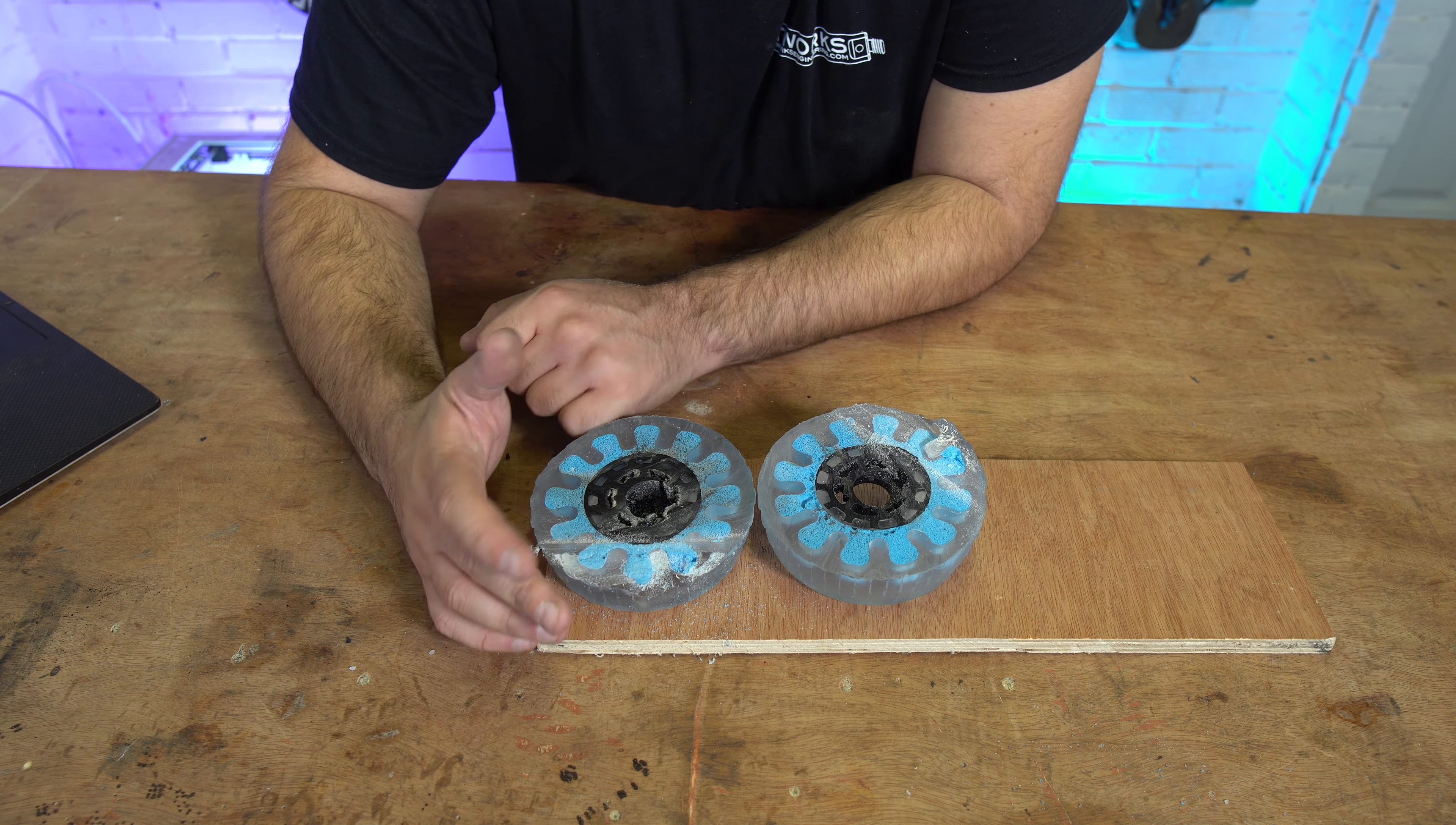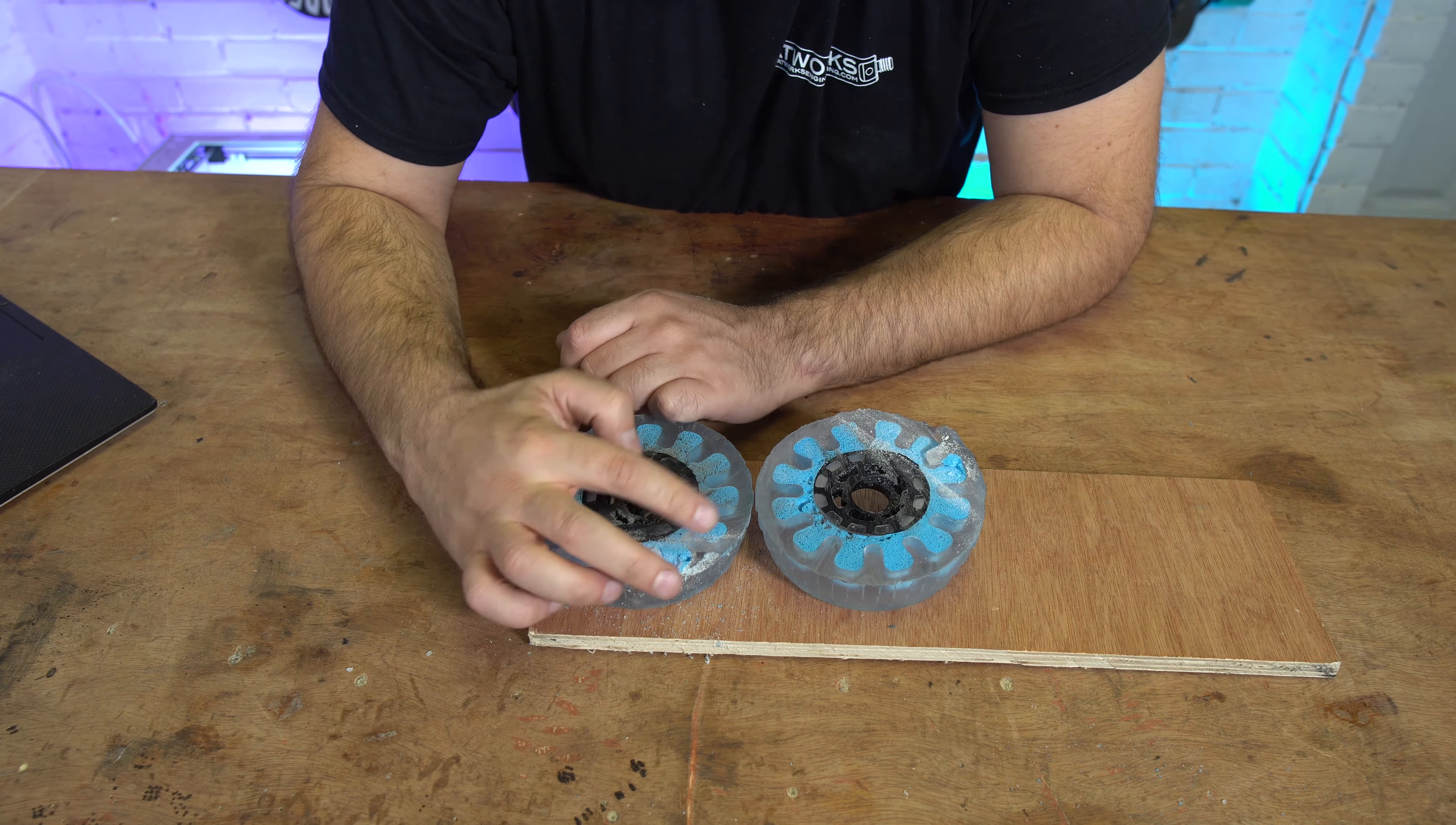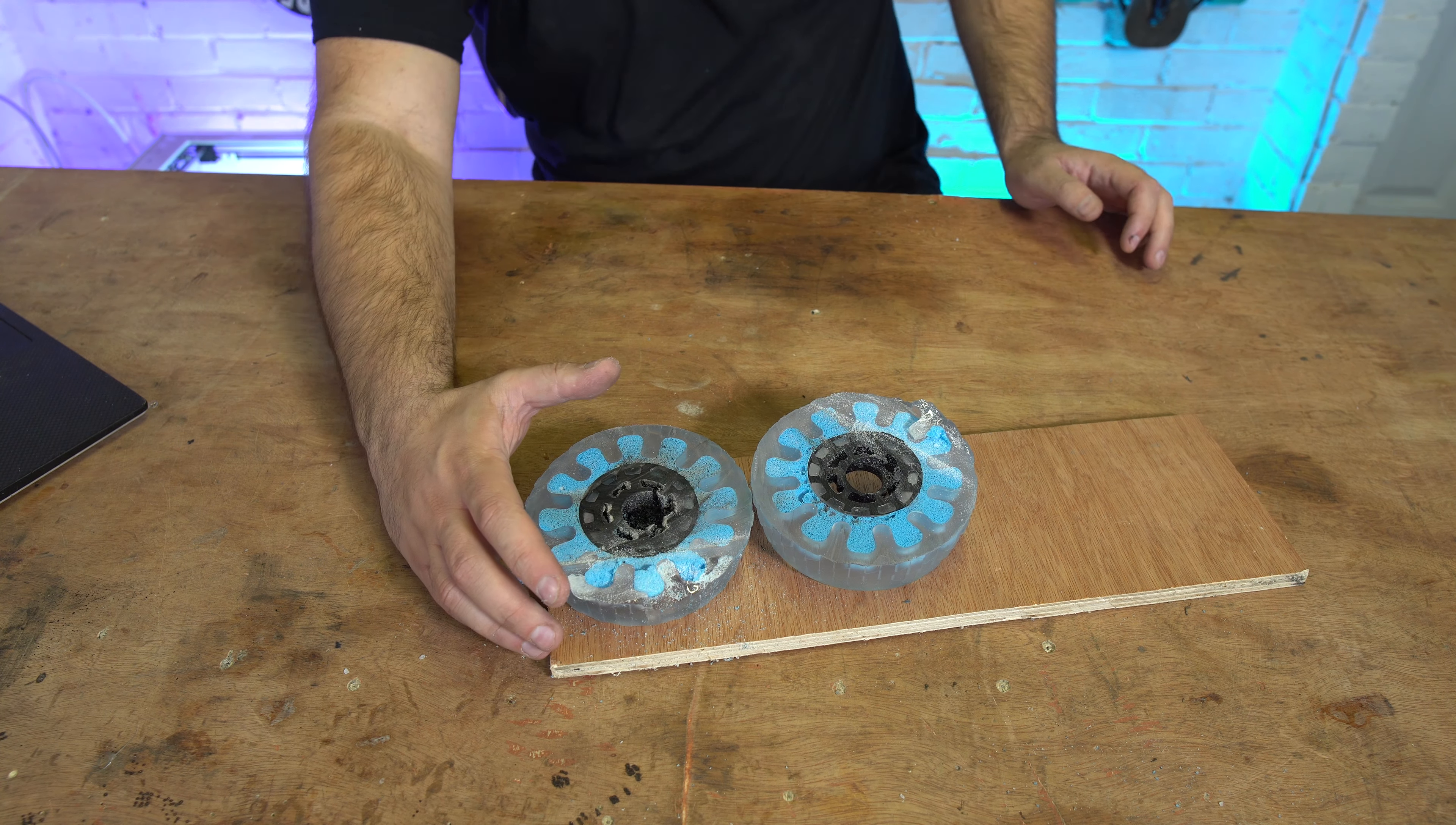When you look at the urethane that's on these wheels, it's fairly tough urethane. Obviously I don't have a hardness meter to measure it, but it's certainly harder than your ABEC 97s and your 77a Kaguamas. This foam inside is actually a lot softer than I was expecting. It's just basically squishy foam that sits in this core and that allows the core to flex.